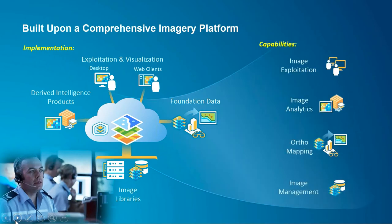Looking at the ArcGIS platform, imagery is a key and vital part that overlays directly on top of the complete structure. At the bottom you have imagery services coming from your imagery libraries. That feeds into a cloud-based structure or file system, however your organization is set up. From that, you can create foundation data with ortho-mapping capabilities and derived products from imagery analytics. The two primary clients for imagery exploitation within ArcGIS are ArcGIS Pro and new web clients, and we're going to present both throughout this presentation.